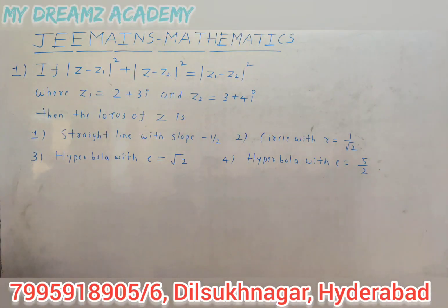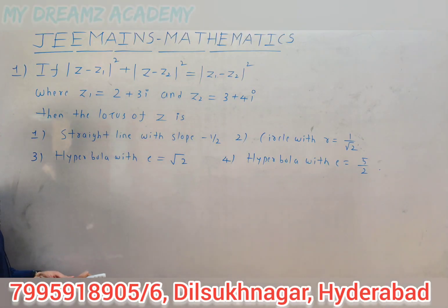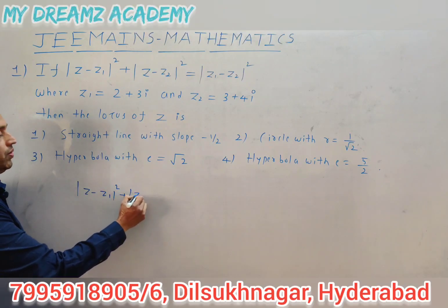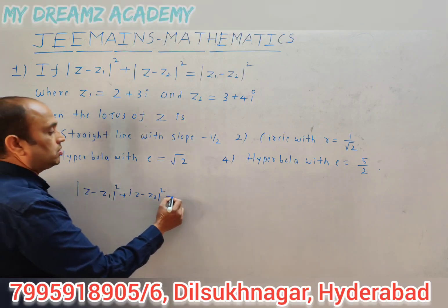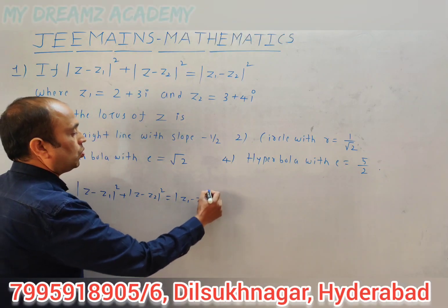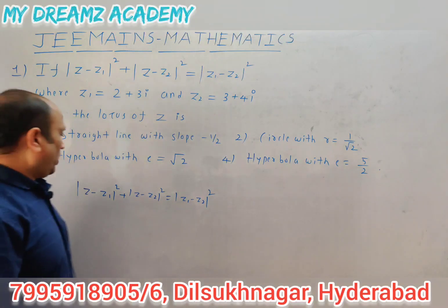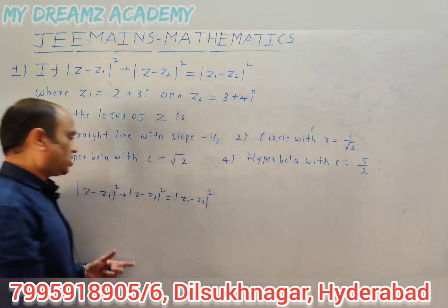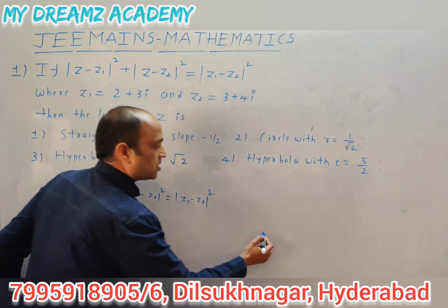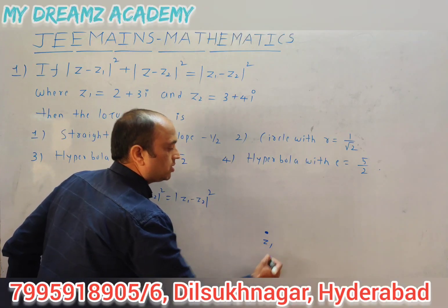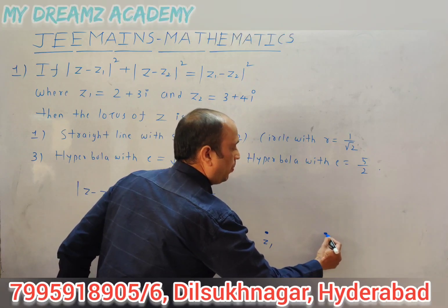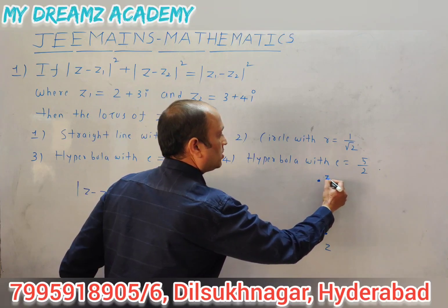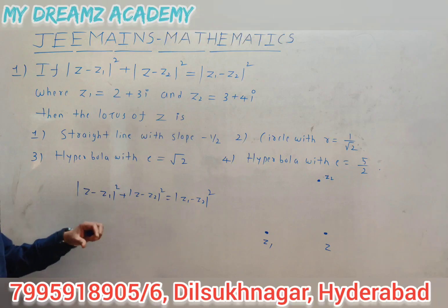For the given condition |z - z1|² + |z - z2|² = |z1 - z2|², these are three points in the Argand plane. z1 is one point, z is another point, and z2 is another point — three points in the Argand plane: z1, z2, z.